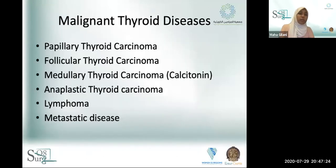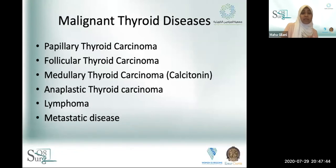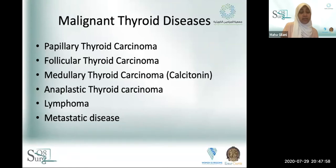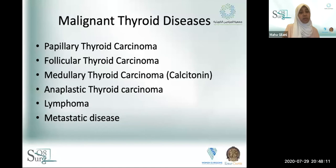The main thyroid carcinomas include: differentiated thyroid carcinomas — papillary, follicular, and Hurthle cell carcinoma; undifferentiated anaplastic thyroid carcinoma; and medullary thyroid carcinoma, which arises from the parafollicular C cells. Less commonly, lymphoma can occur, and very rarely, metastatic disease to the thyroid from other sites — mainly the kidneys — such as renal cell carcinoma.